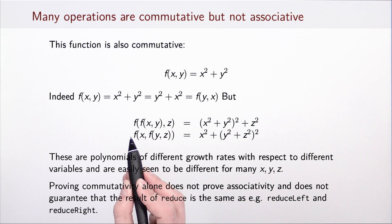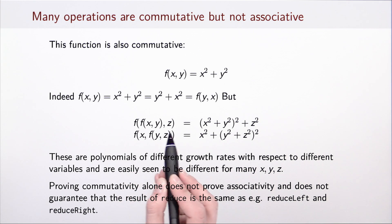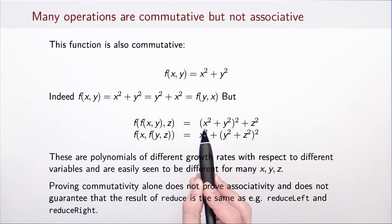On the left side we get (x squared plus y squared) squared plus z squared, and on the other side we have x squared plus (y squared plus z squared) squared. These two expressions are easily seen to be distinct for many values of x, y, and z. For example, the degree of x on the left-hand side is 4, where it is 2 on the right-hand side. So because of such examples, it is important to keep in mind that proving commutativity alone will not be sufficient to imply associativity or that reduce gives the same result regardless of the order of operations.